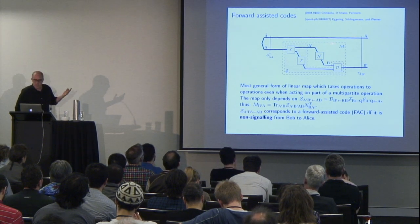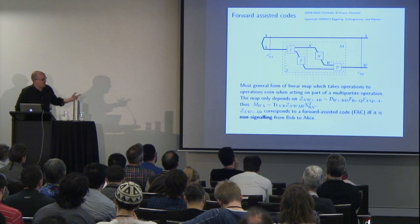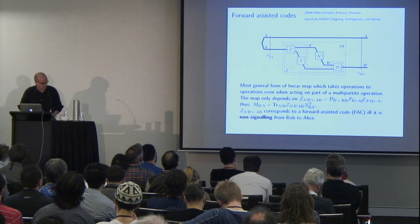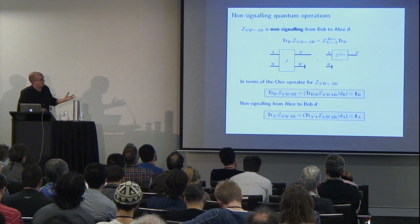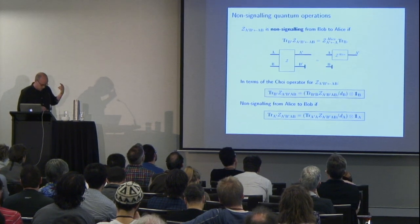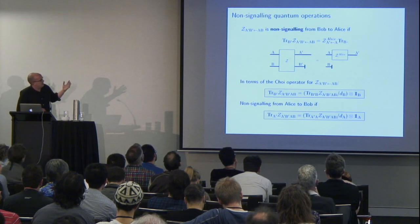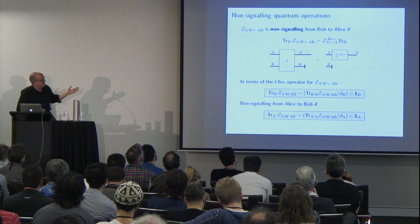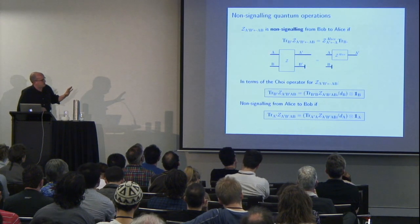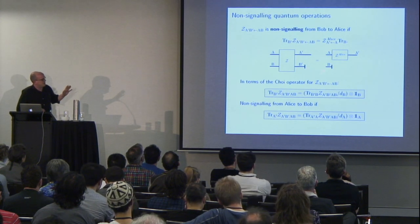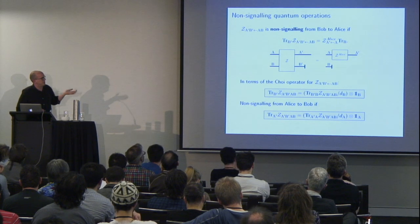There's also a result by Eggeling, Schlingemann, and Werner which says that this bipartite operation corresponds to a forward-assisted code if and only if it's non-signaling from Bob to Alice. In the context of quantum operations, this is a fairly straightforward generalization of non-signaling for classical bipartite conditional probability distributions. If we have bipartite operation Z that is non-signaling from Bob to Alice — if we trace out Bob's output system — then the resulting channel looks like one where Bob's input is thrown away and Alice applies some channel independently of Bob's input.